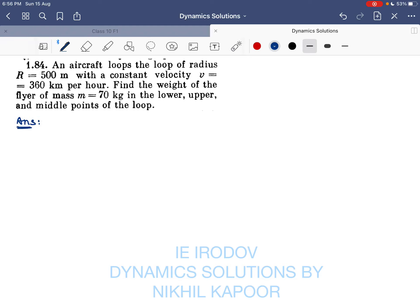Okay, so let's start with the 84th example. An aircraft loops the loop of radius R = 500 m with a constant velocity v = 360 km per hour.